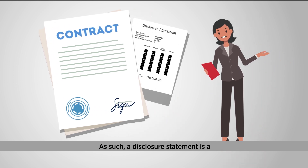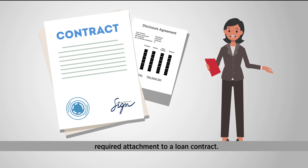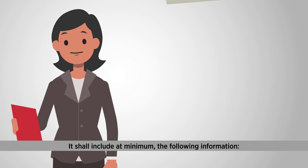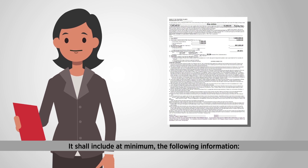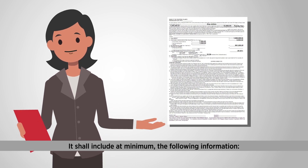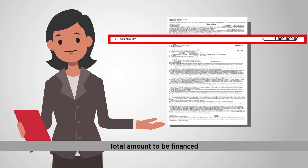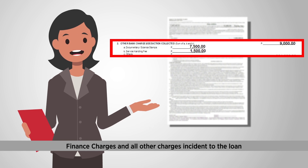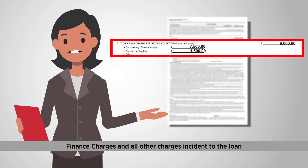As such, a disclosure statement is a required attachment to a loan contract. It shall include, at the minimum, the following information: the total amount to be financed, and finance charges and all other charges incident to the loan.